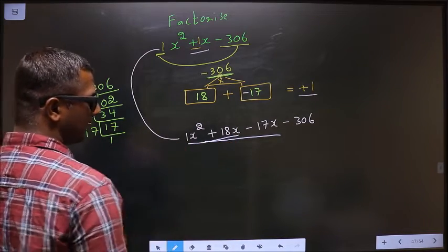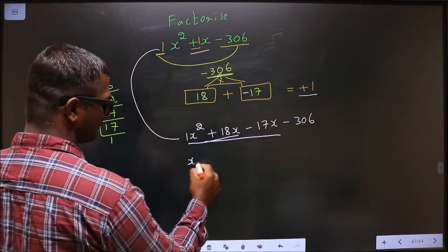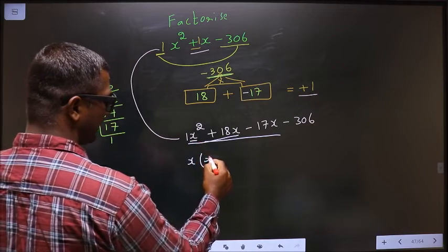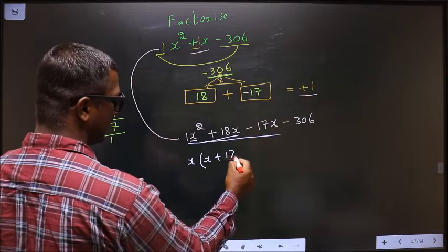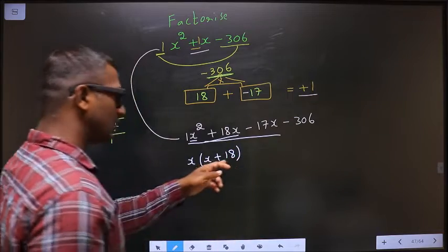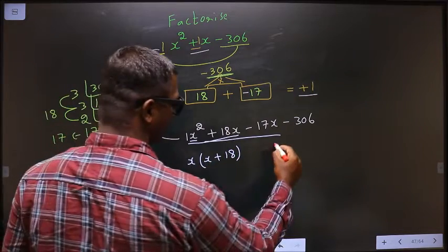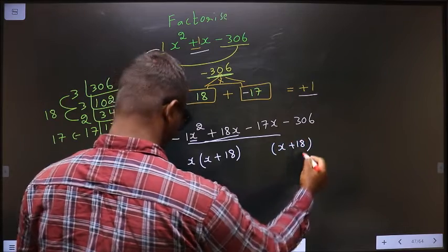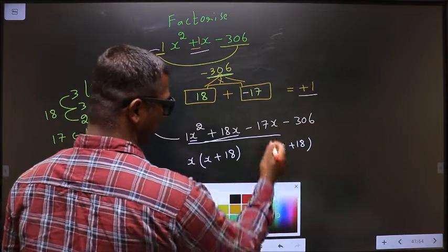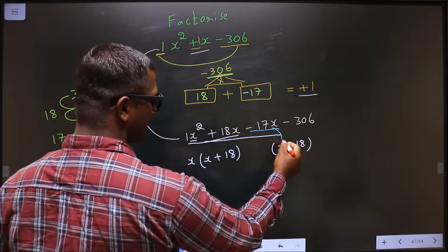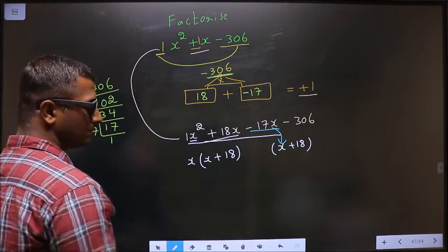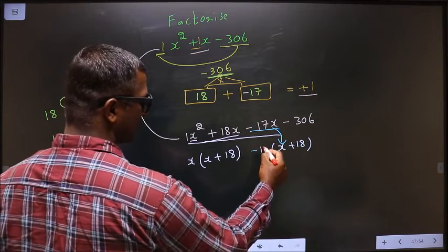From these first two terms, what can be taken out common is x. So here I get x, and here I get +18. Whatever you got in this bracket, here also you should get the same. From -17x and -306, x has gone inside, so outside is -17.